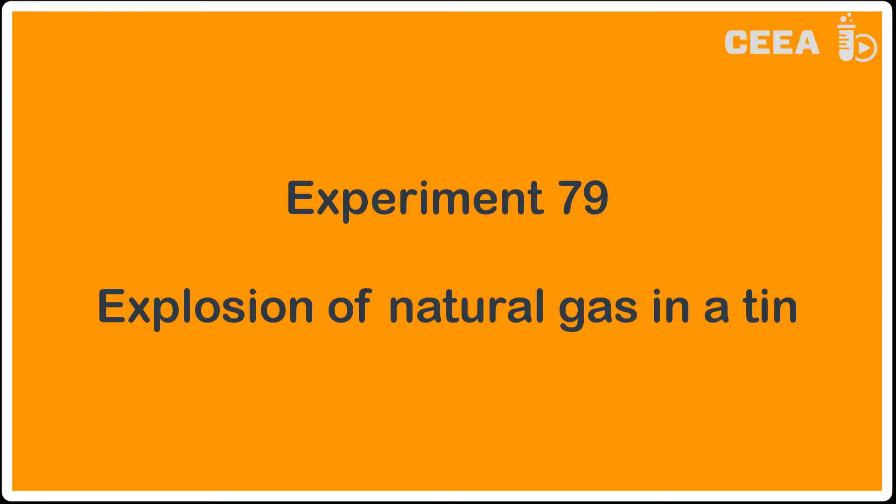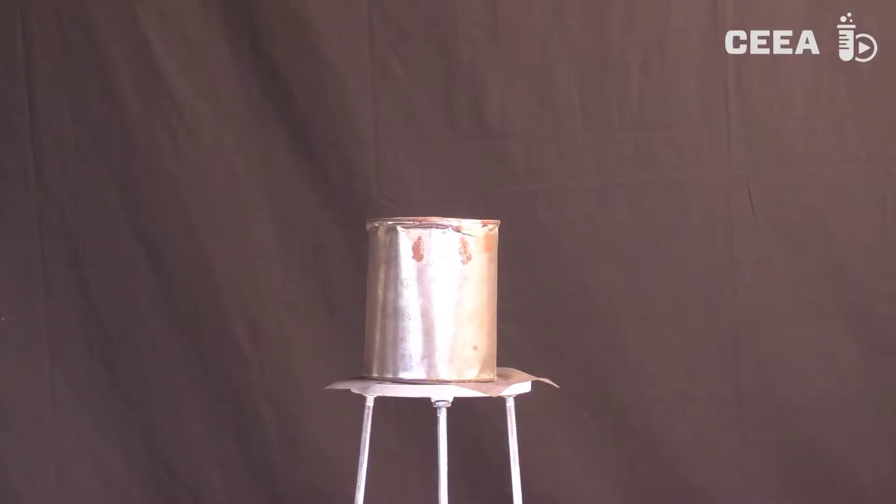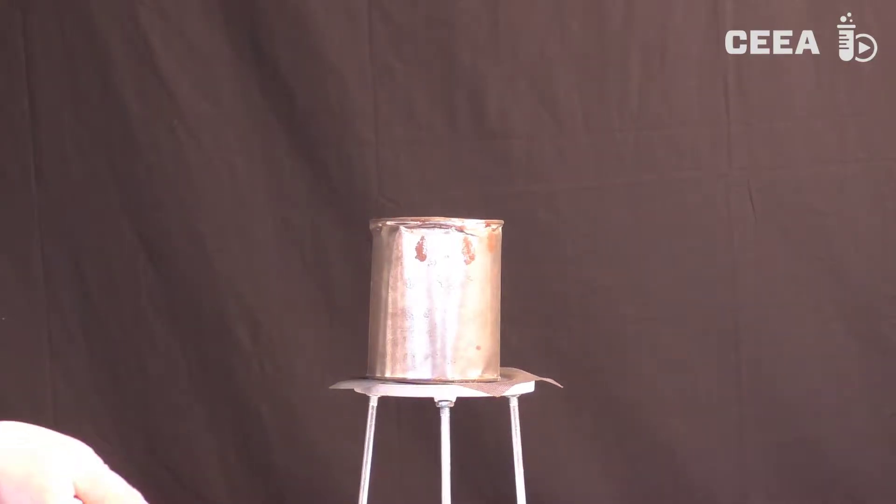Experiment 79: Explosion of natural gas in the tin. In this experiment we show that the combustion process of natural gas, in this case methane, does not always proceed in a controlled way.